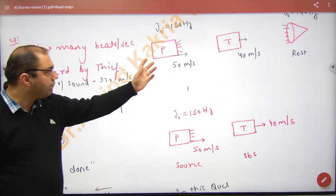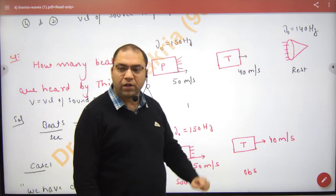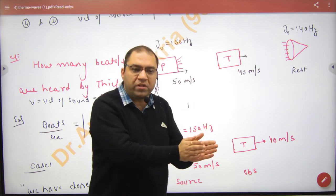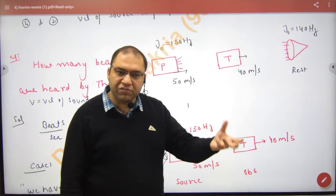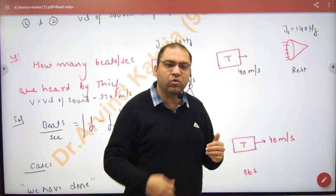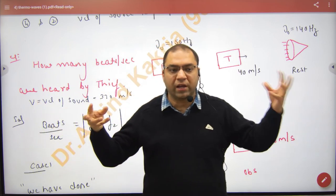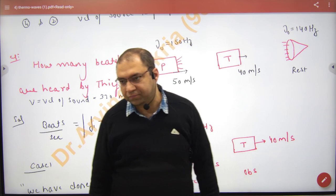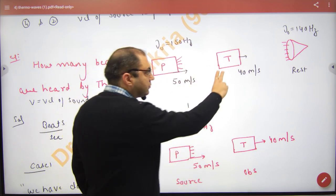Suppose a police car moving at 50 meters per second has a siren frequency of 150 Hz, and it moves after a thief moving at 40 meters per second. The thief will not hear frequency 150; they will hear a new frequency calculated by applying Doppler's effect. Then the loudspeaker gives 140. The thief is going away so they hear either the siren frequency or the loudspeaker frequency — two frequencies. The number of beats is the difference of frequency.